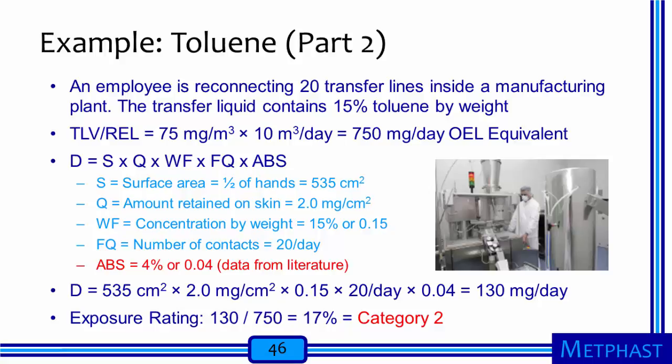Dividing 3,200 mg/day by the OEL equivalent of 750 mg/day gives about 4.3, or 430% — clearly a Category 4 exposure, requiring advice from specialists. However, if instead of the default absorption we use published literature data showing only 4% of toluene is absorbed, the absorbed dose rate becomes 130 mg/day rather than 3,200 mg/day. This new estimate is only 17% of the OEL equivalent, yielding a Category 2 rating instead of Category 4. With this more accurate absorption value, we can consider process modification, chemical substitution, worker isolation, better cleaning routines, improved training, better hygiene procedures, better laundering, skin care programs, disposable gloves, and skin condition reporting.